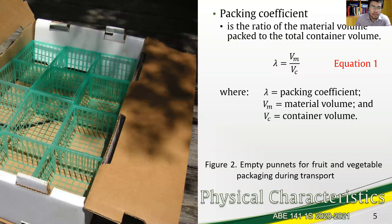The stacking is best described by a property, the packing coefficient, which is the ratio of the material volume packed to the total container volume and it's defined by equation 1. Equation 1 is essentially the definition which is material volume over the container volume, vm over vc.